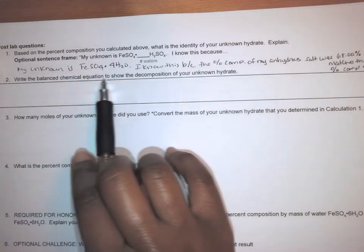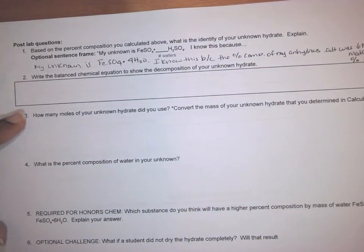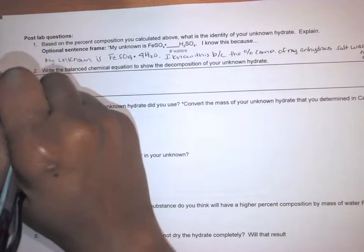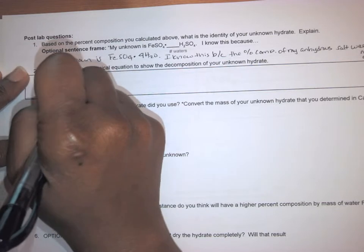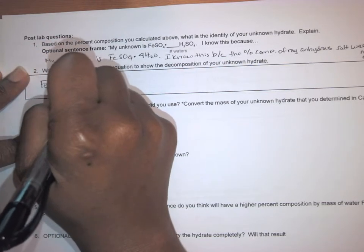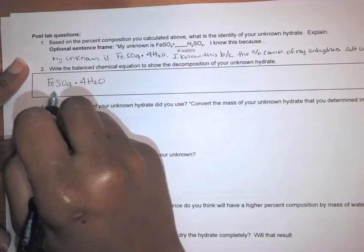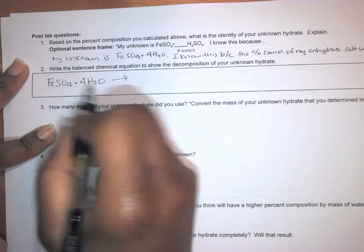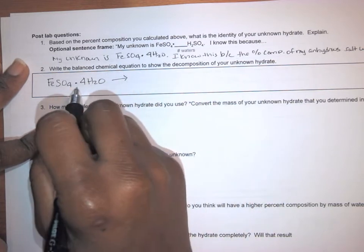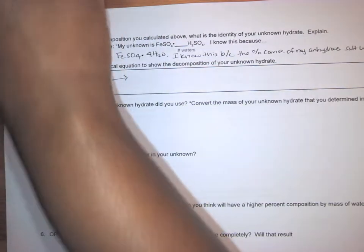Question two is writing a balanced chemical equation to show the decomposition of your unknown hydrate. So to write the balanced chemical equation, if this is your unknown hydrate, when you heated it up, the reaction that you exposed it to, or that took place was this. You had your hydrate, and remember those waters are loosely attached.